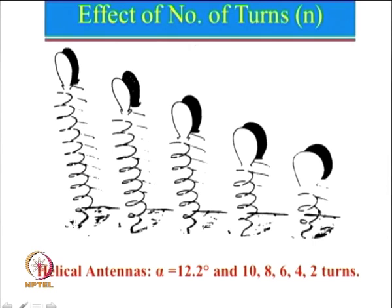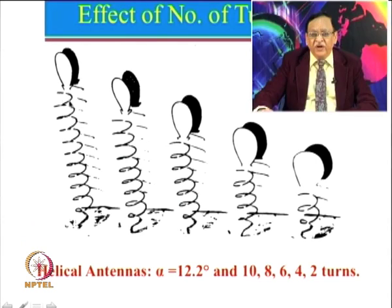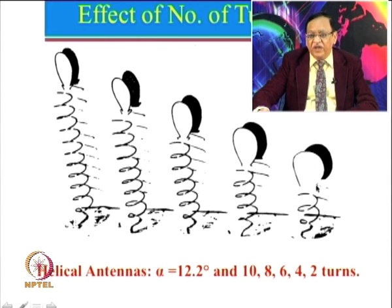Experimental results show antenna patterns for 2 turns, 4 turns, 6 turns, 8 turns, and 10 turns. As the number of elements increases, gain increases and beam width reduces. One can see that the 2-turn antenna has a larger beam width compared to the 10-turn antenna which has a very narrow beam width, meaning the 10-turn antenna has a larger gain compared to the 2-turn antenna.